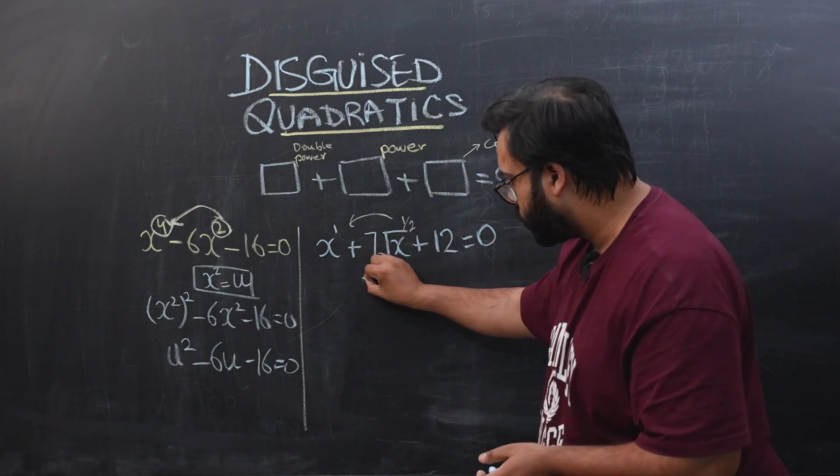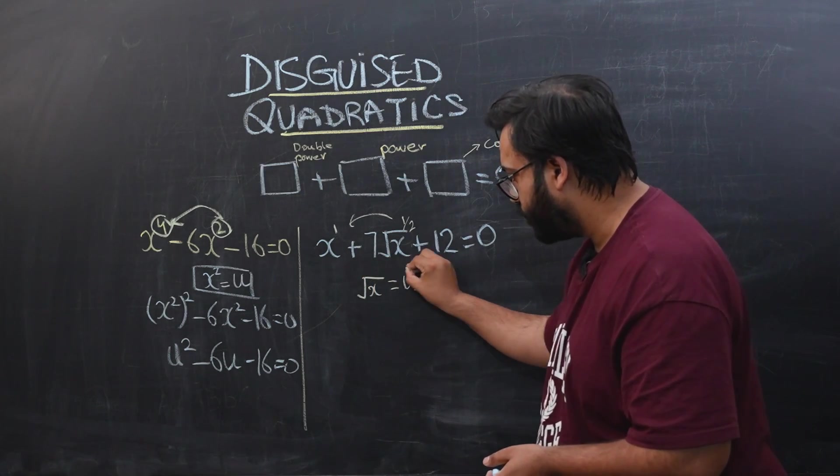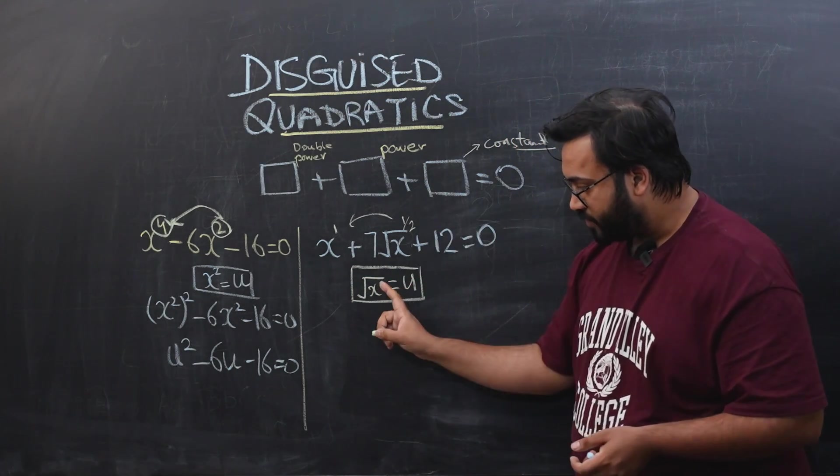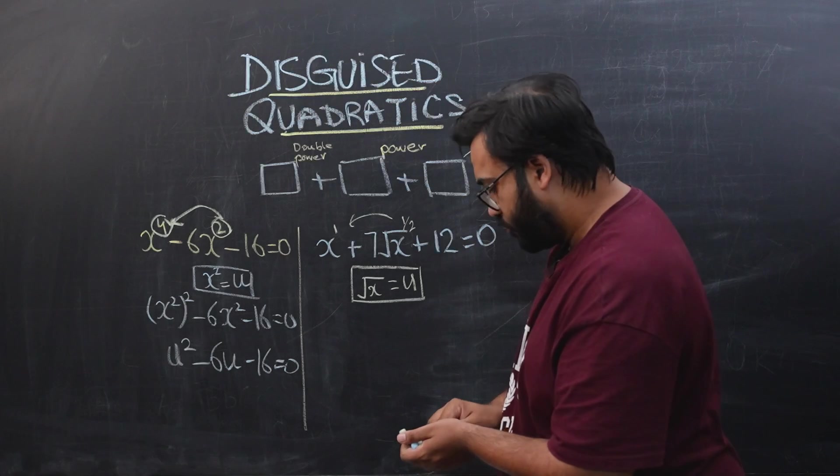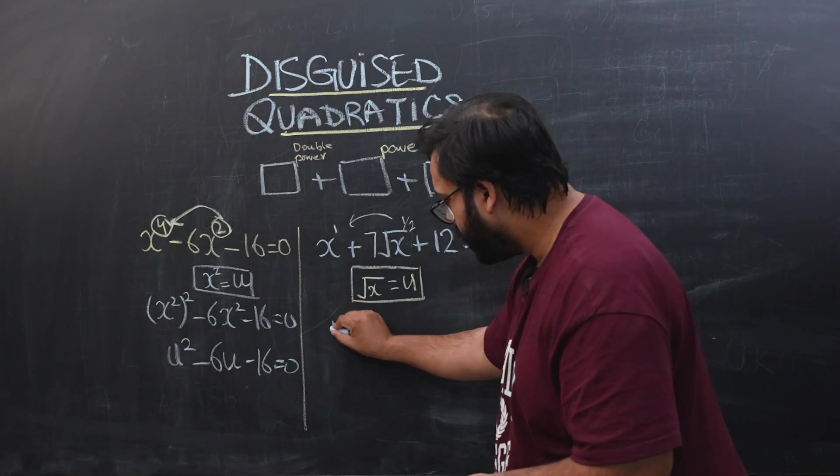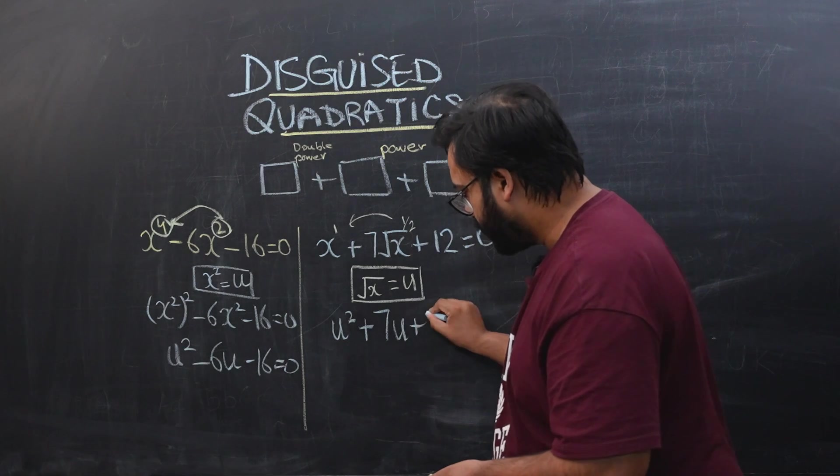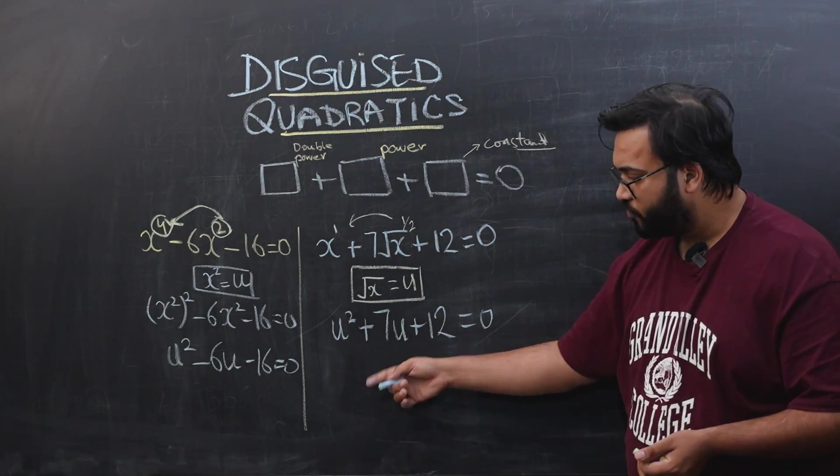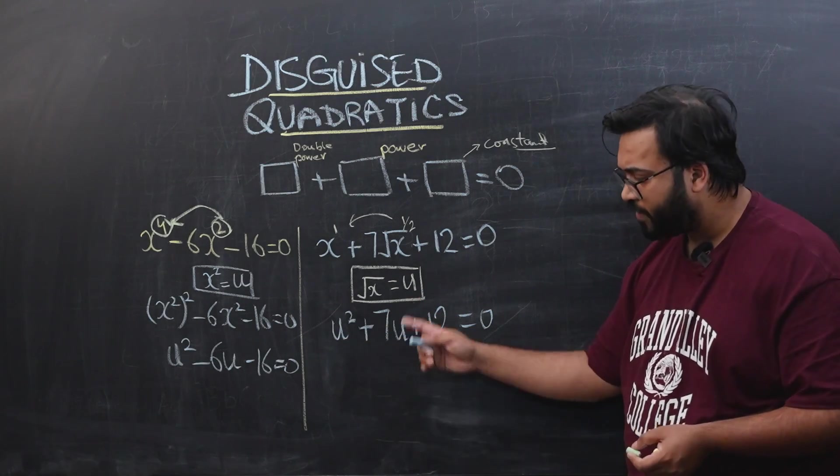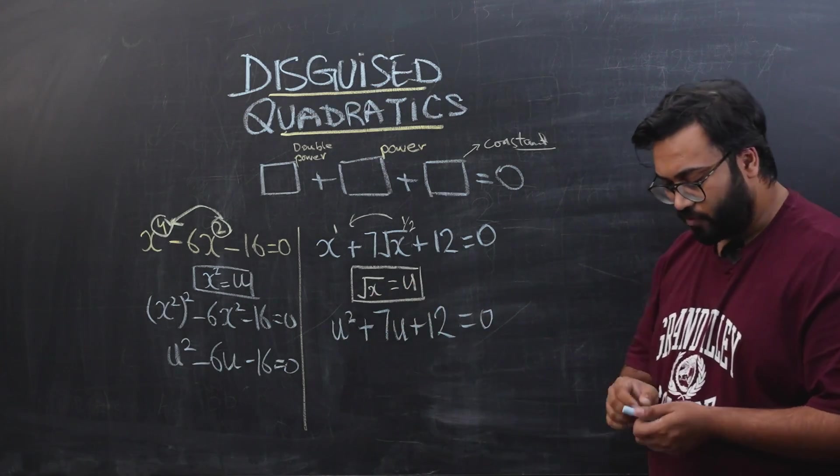I'm going to use square root of x as a substitution u, and we know that x would be equal to u squared then. I'm going to place u squared over here plus 7u plus 12 equals zero. And similarly, first you're going to solve for u. Once you find the values of u by quadratic equation solving, you are going to put them over here and you can find the values of x.